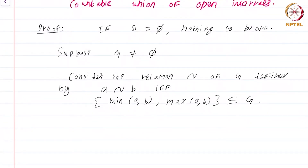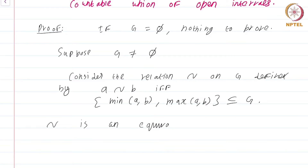So, consider two points A and B, look at their minimum and maximum, and look at the closed interval created by the minimum and maximum. A is related to B if and only if [min(A,B), max(A,B)] is a subset of G. As you can guess, what I am going to prove is that tilde is an equivalence relation.